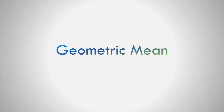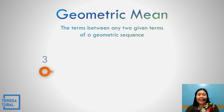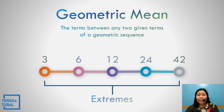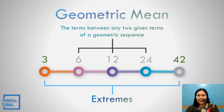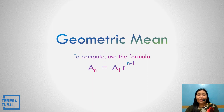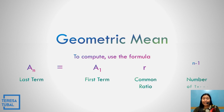What you have learned: What is geometric mean? The terms between any two given terms of a geometric sequence. For example: 3, 6, 12, 24, and 42 — the extremes are 3 and 42, and the means are 6, 12, and 24. The formula used is the same as for the geometric sequence: a sub n equals a sub 1 times r raised to n minus 1, where a sub n is the last term, a sub 1 is the first term, r is the common ratio, and n is the number of terms.